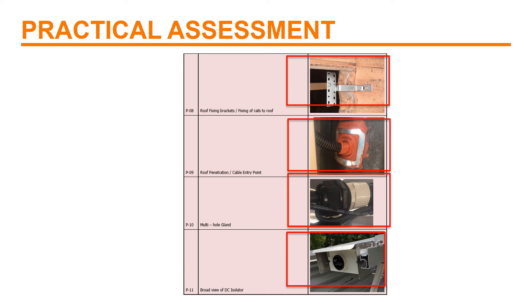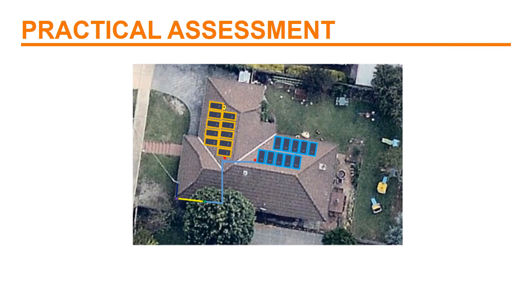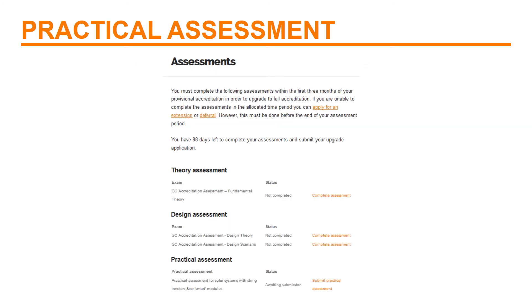Make sure these photos are clear and that they give the CEC assessor some perspective — this way we can easily see that you are competent to install solar. You also need to provide the relevant commissioning checklists and certificate of compliance for the job. And lastly, we need to see a planned view of the house with the location of the panels, inverters and wiring run. This can be a sketch if you don't have access to satellite images. Once you have your photos and documentation together, you can submit the practical assessment here.